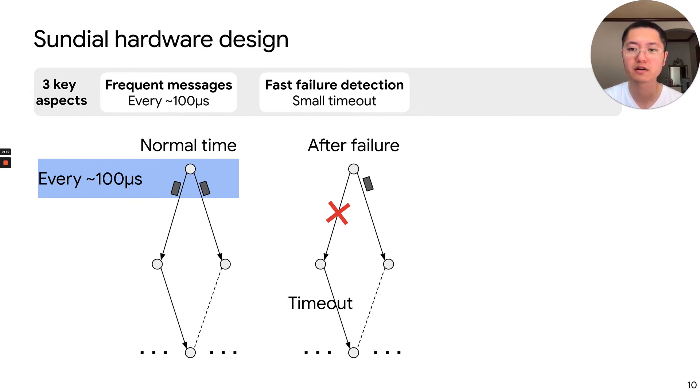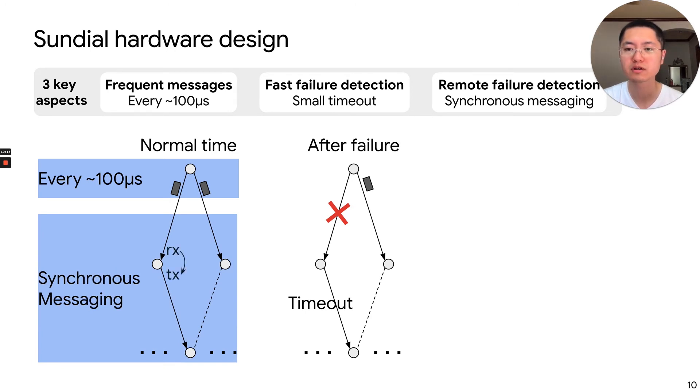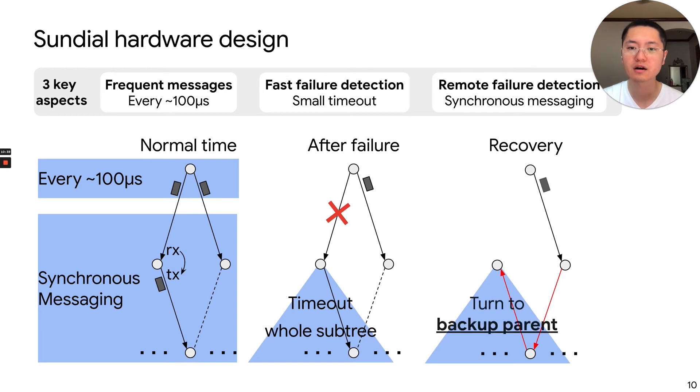But remember, we also have other nodes that are farther away from the failure. And they also need to detect the failure. So we use synchronous messaging to help the remote failure detection. The synchronous messaging means one node only sends a message out when it receives one. That's why it's called synchronous. With the synchronous messaging, when a failure happens, the whole subtree under the failure all stops receiving messages. So all nodes under the subtree will get timeout. Then to recover the failure, all nodes just turn to their backup parents to reform a new tree that recovers the connectivity. All of these are purely local actions, so they are very fast.